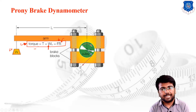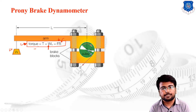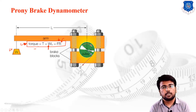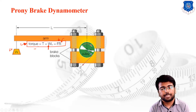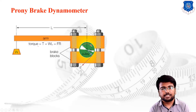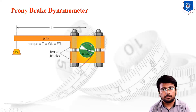So here we are concluding today's lecture. We started with the concept of torque and shaft power, then covered the basic classification of torque measurement techniques: absorption type, transmission type, and driving type dynamometers. Under absorption type, we discussed the Prony brake dynamometer. In the next lecture, we will discuss the remaining absorption type dynamometers — rope brake dynamometer, hydraulic dynamometer, and eddy current dynamometer. Thank you.